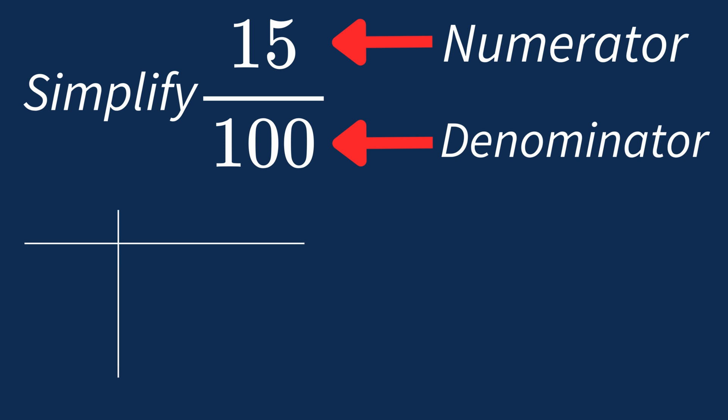First, let's list out the factors for each. For 15, the factors are 1, 3, 5, and 15.